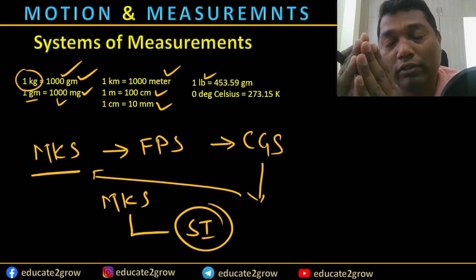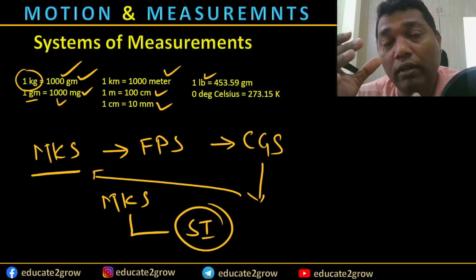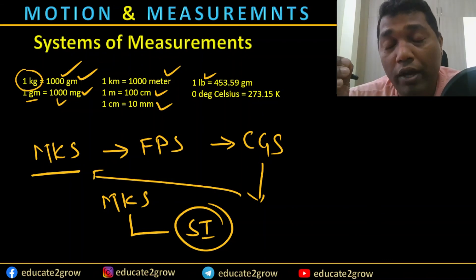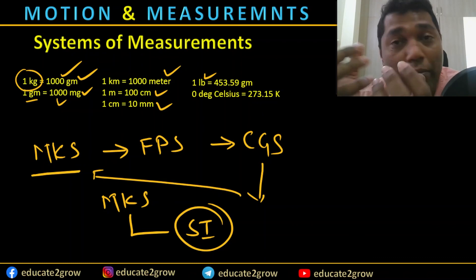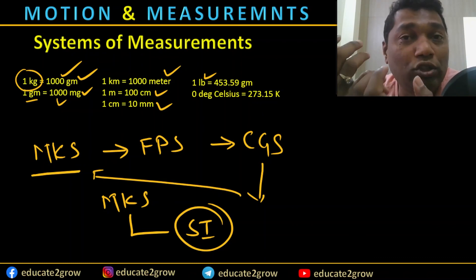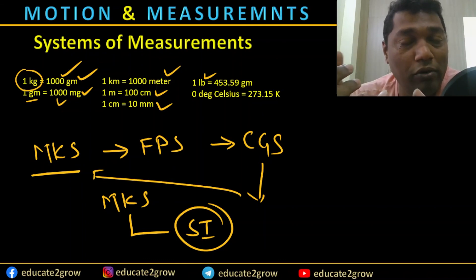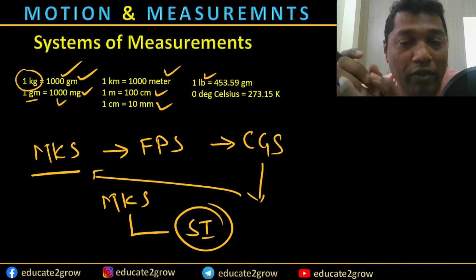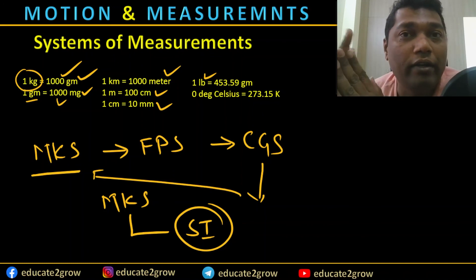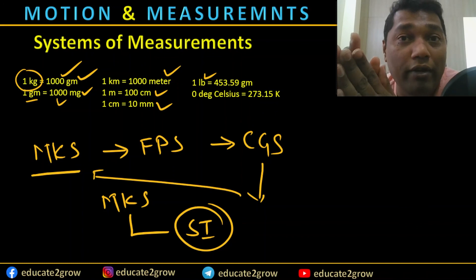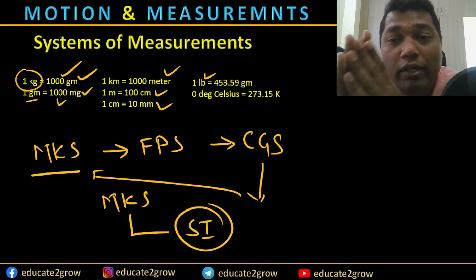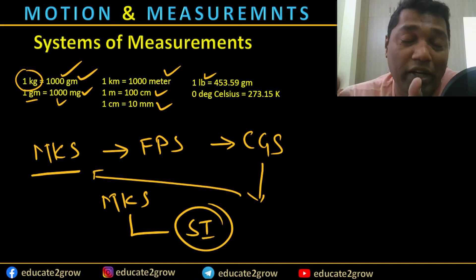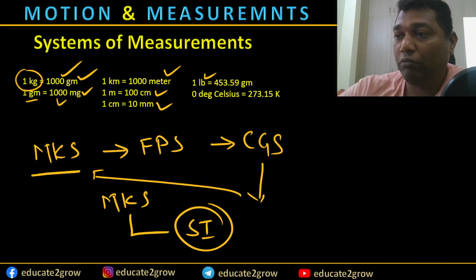This is all about systems of measurement. In the next section we will discuss how to measure length, area, volume, temperature, and what instruments are used and what methodology is applied. We will discuss those in depth in that section. Till then, goodbye and take care. Please subscribe, like, and comment — it helps bring similar content. Thank you very much, see you in the next class.